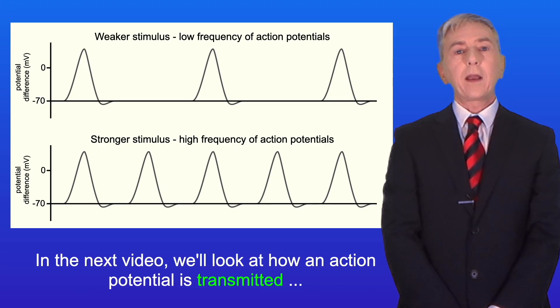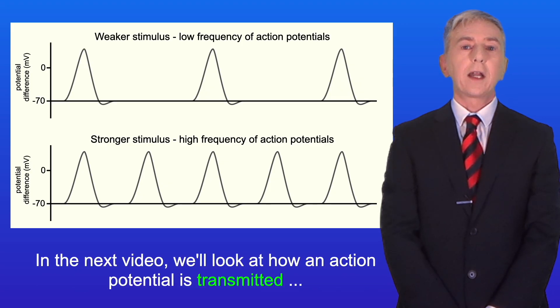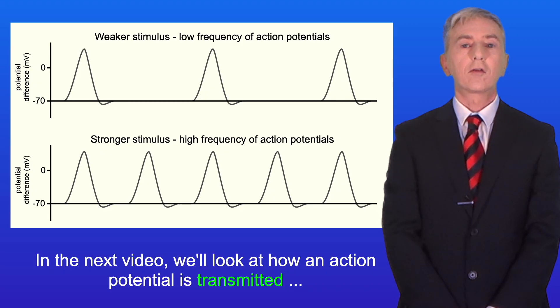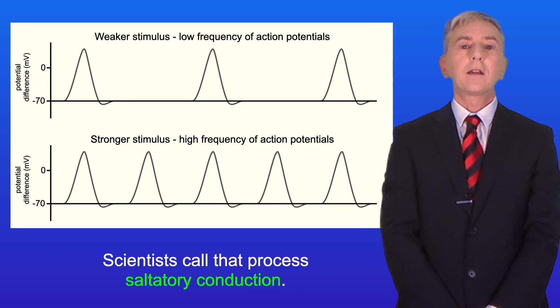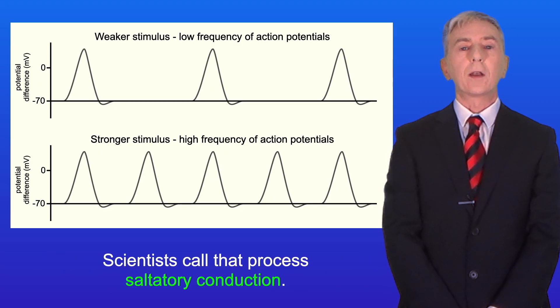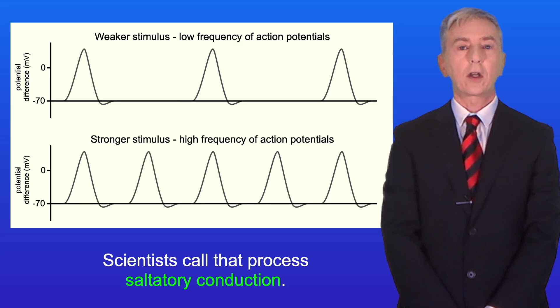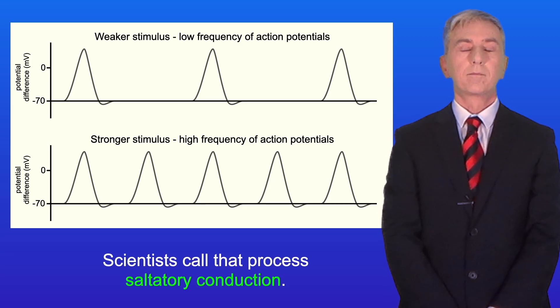In the next video we look at how an action potential is transmitted in a myelinated neuron — scientists call that process saltatory conduction.